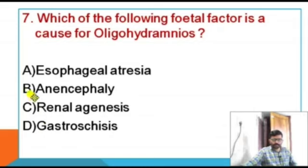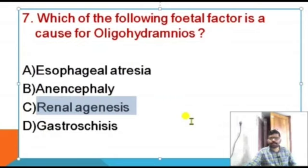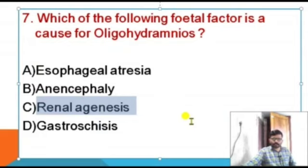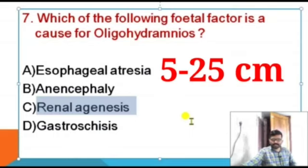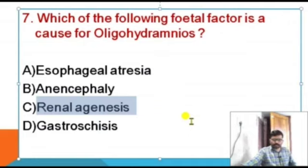The correct answer is renal agenesis. Oligohydramnios is reduced amniotic fluid — less than 200 ml. Polyhydramnios is excess amniotic fluid. The amniotic fluid index ranges from 5 to 25 cm; below 5 cm is oligohydramnios and above 25 cm is polyhydramnios.